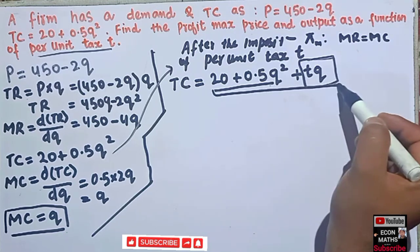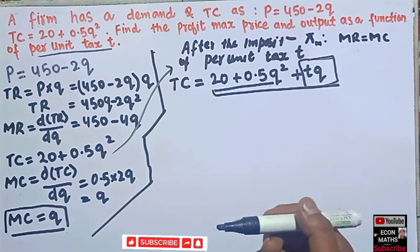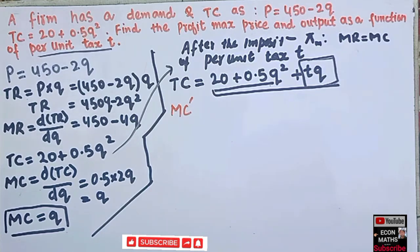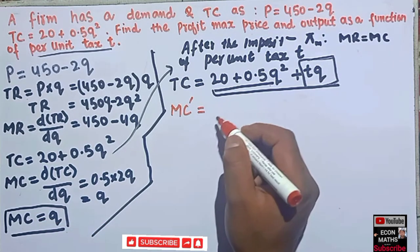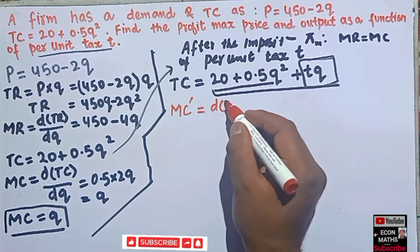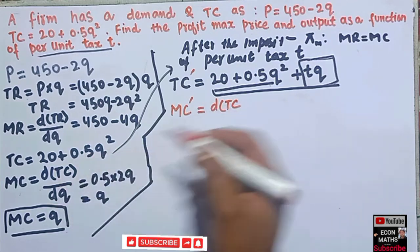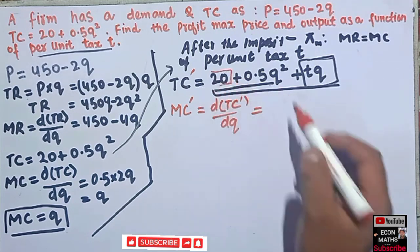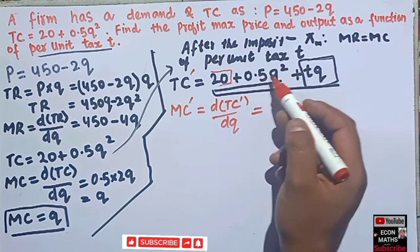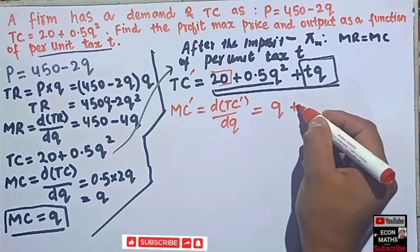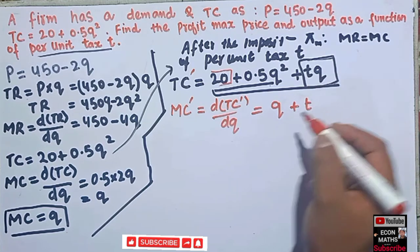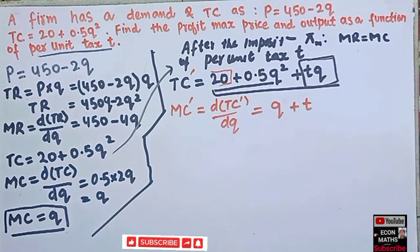What is our new marginal cost then? The new marginal cost MC' = d(TC')/dq. The derivative of 20 is zero, derivative of 0.5q squared is q, and the derivative of tq is t. So our new marginal cost is MC' = q + t. The per unit tax has shifted the marginal cost upward by t.